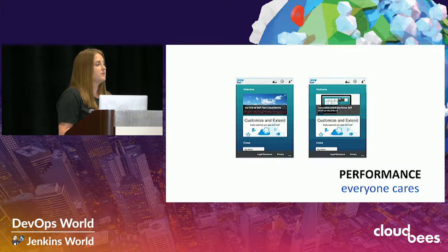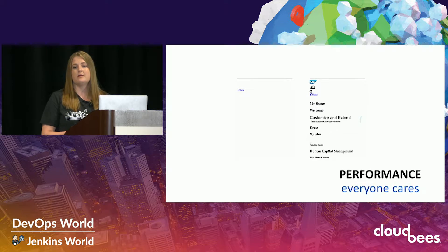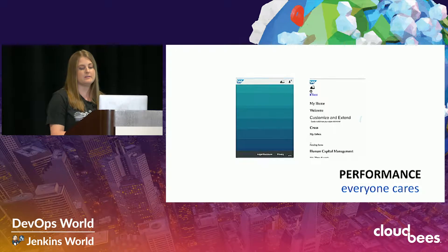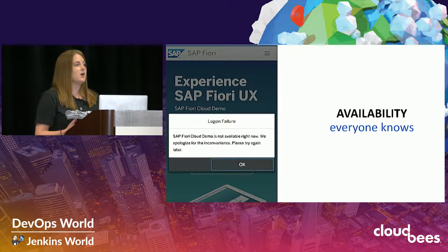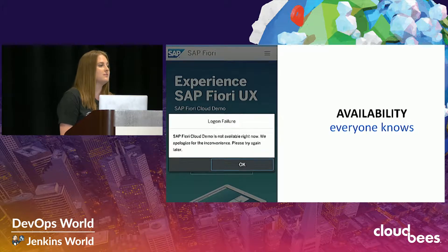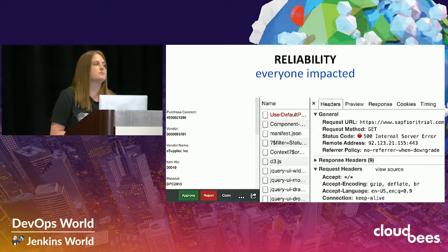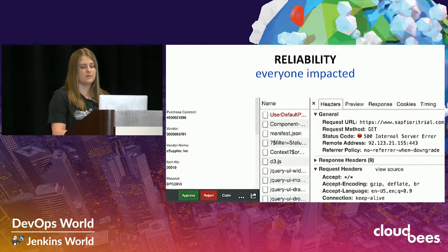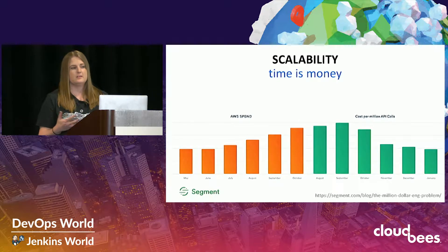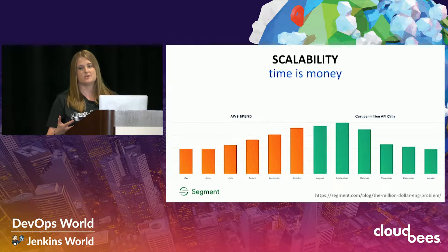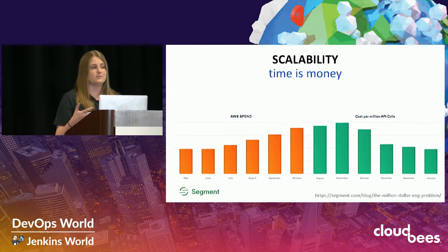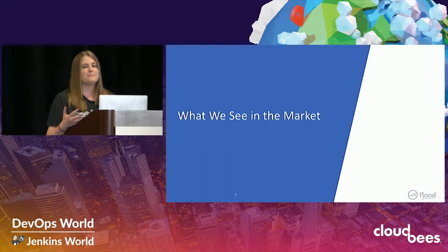Beyond just measuring for performance and user accessibility, we need to think about other aspects. One of those is availability — if your application is not available, people will take to Twitter or the App Store and tarnish your brand reputation. We also look at reliability — not only avoiding 500-level errors, but receiving the appropriate information back from requests and responses. And lastly, scalability: do you have enough infrastructure to handle your users, plus about 25% above that to handle unexpected flux?